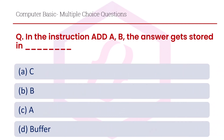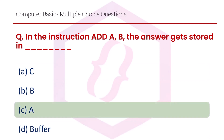In the instruction ADD A, B, the answer gets stored in: option A C, option B B, option C A, option D buffer. The right answer is option C, A.